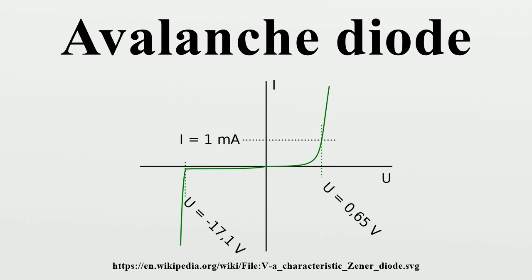Microwave frequency generation: If placed into a resonant circuit, avalanche diodes can act as negative resistance devices. The IMPATT diode is an avalanche diode optimized for frequency generation.